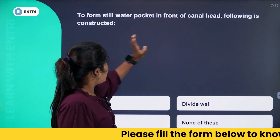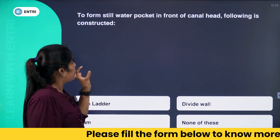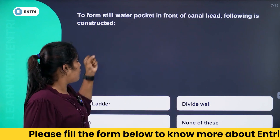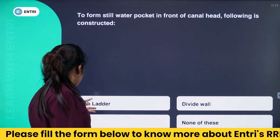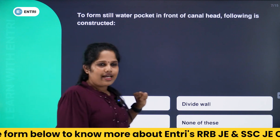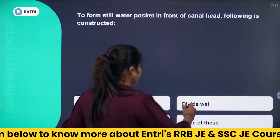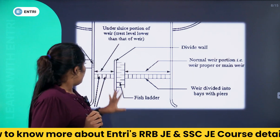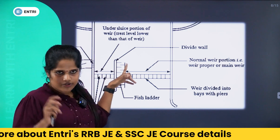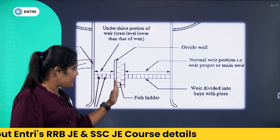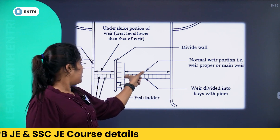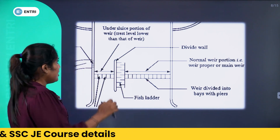Next question: to form a still water pocket in front of the canal head, which of the following is constructed? Options are: Fish ladder, Divide wall, Dam, or None of these. Fish ladder is for easy movement of fish — that is not it. The answer is Divide wall. The divide wall creates the still water pocket at the canal head. The under sluice is the normal weir portion.